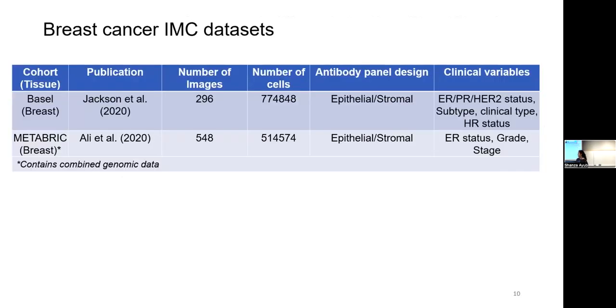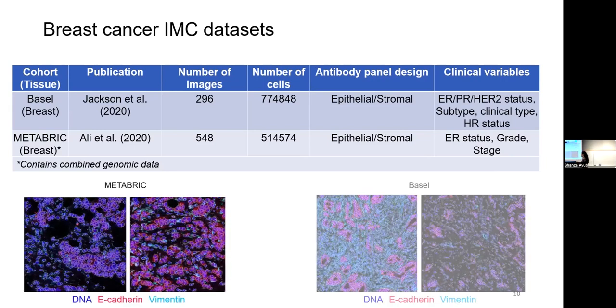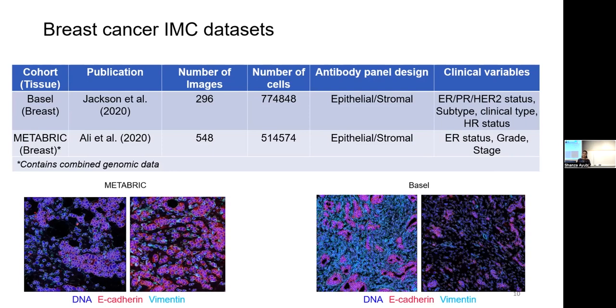So I have applied my model on two breast cancer IMC data sets. One is the Basel cohort from the Jackson et al. 2020 paper, and the other one is the Metabric cohort from the Ali 2020 paper. And what's cool about these data sets is that they're very similar in terms of their antibody panel, and both of them have clinical data available. So concurrently with running my model, of course, your model has to be better than the state of the art. And so I've also been running these data sets on PhenoGraph to see how much better my model is doing.